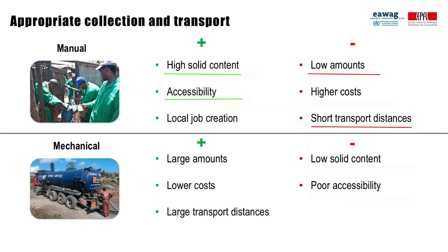Mechanical collection and transport technologies are often only appropriate for sludge with a low solids content. In addition, access to onsite sanitation technologies can be a challenge. In general, per volume of vehicle sludge, manual collection and transport are more expensive compared to mechanical technologies. This is due to the time and work spent accessing the onsite sanitation technology and the low volumes of sludge collected and transported for treatment. This is an inequality for urban poor that should be considered.